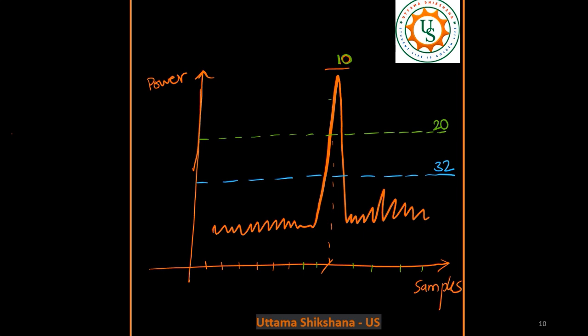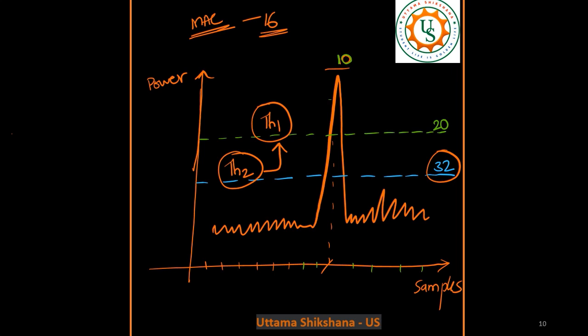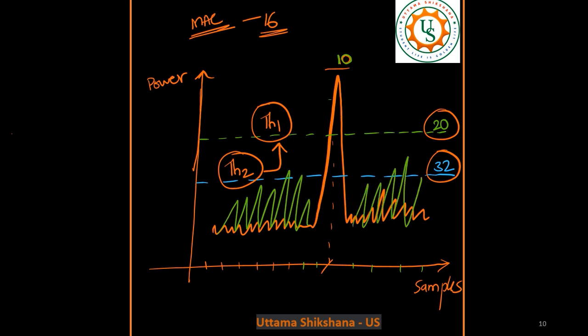Now considering this, looking at the plot example: let's say the threshold is set at threshold 2, which could accommodate 32 UEs. But since the MAC scheduler will only address 16 UEs, we can relax this threshold and set it to a slightly higher value — threshold number one — which can ensure detection of around 20 UEs without false detection. Also, since the threshold is now set a bit higher, you can have fewer repetitions in the system, meaning more noise variation is tolerated as long as it stays below threshold one.